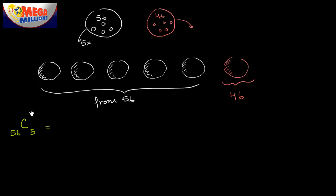The first ball I pick, there's 56 possibilities. Since we're not replacing the ball, the next ball I pick, there's going to be 55 possibilities. The ball after that, there's going to be 54 possibilities. The ball after that, there's going to be 53 possibilities.